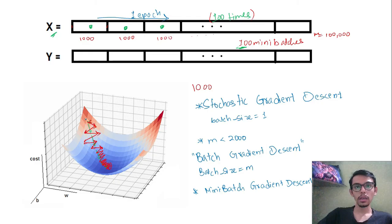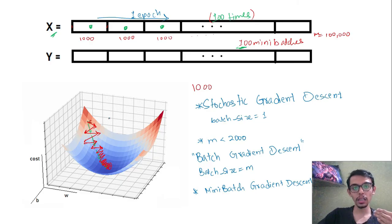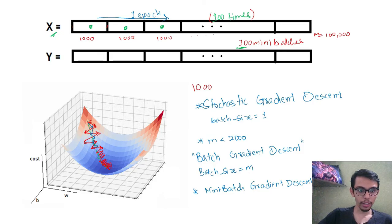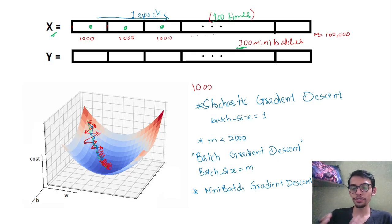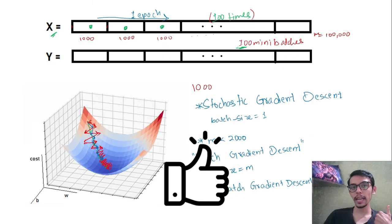There are also other algorithms that can help reduce this zigzagness in the path — they smoothen out the path, reduce oscillations, and help us approach the minimum much faster. Some of these algorithms are gradient descent with momentum, RMSProp, Adam, and others. In the next video we will study those algorithms and how they work alongside mini batch gradient descent to train our model much faster. If you found this video helpful, hit the like button and I'll see you in the next one.